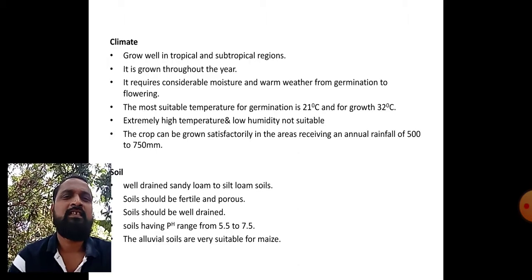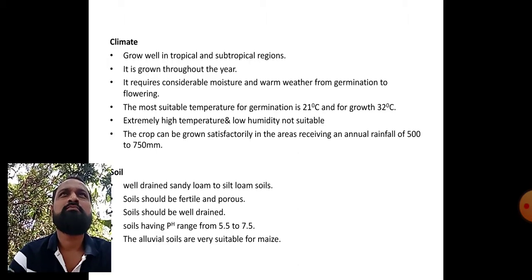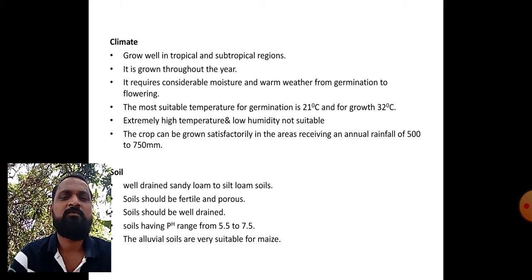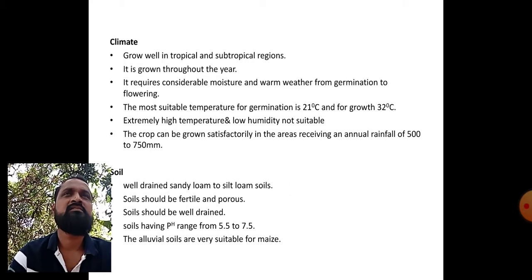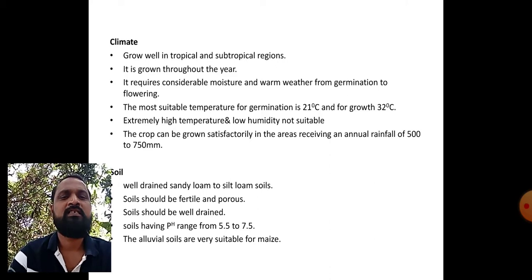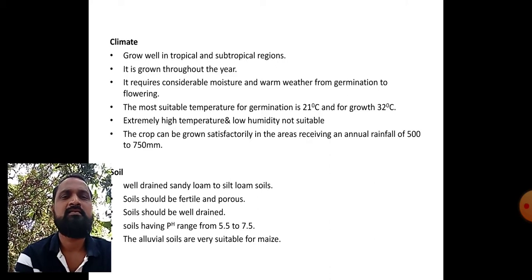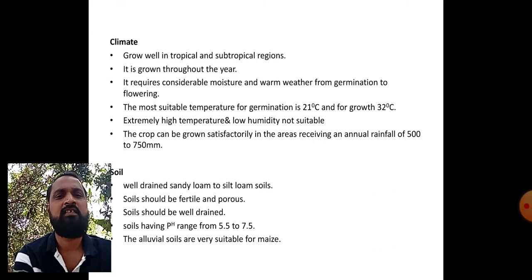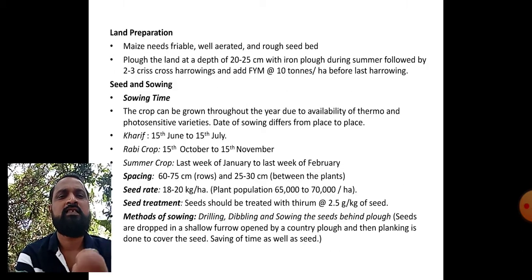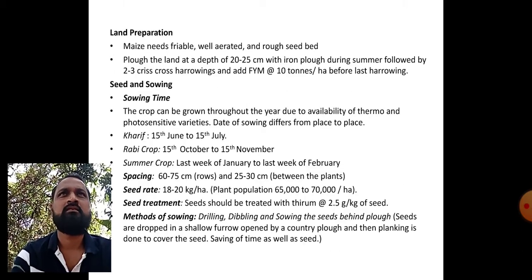Soil: well-drained sandy loam and silty loam soils are very suitable for this crop. The soils should be very fertile and porous, well drained, and the pH of the soil should range from 5.5 to 7.5. Alluvial soils are very suitable for maize cultivation, as most alluvial soils are well fertile.